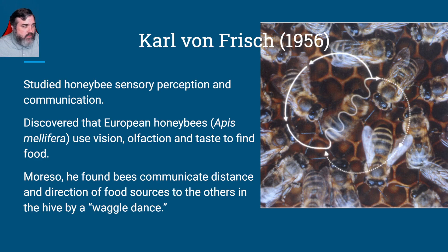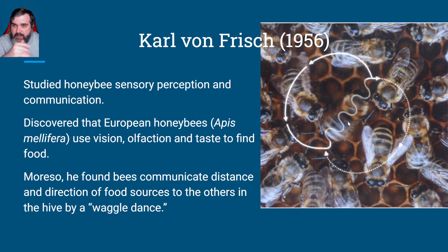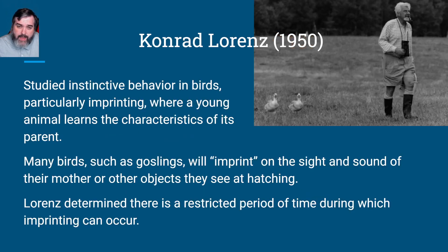Let's look at Carl von Frisch from 1956. He studied honeybee sensory perception and communication. He discovered that honeybees — Apis mellifera — use vision, olfaction, and taste to find food. More so, he found bees communicate the distance and direction of a food source to others in the hive by a waggle dance. The number of waggles has to do with the distance, and they orient relative to the hive and the sun. We'll come back and talk more about the waggle dance later — he was one of the early animal behaviorists in this course.